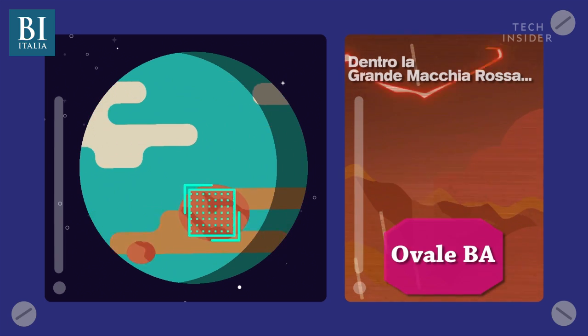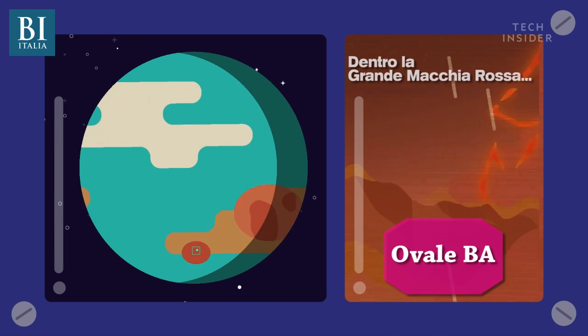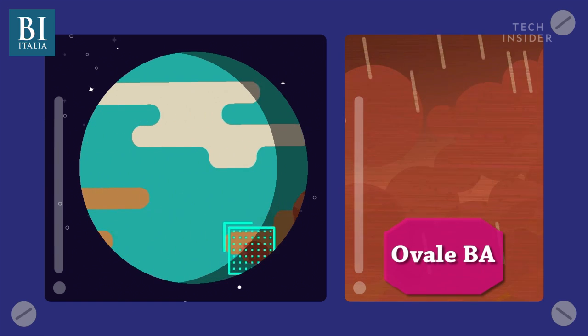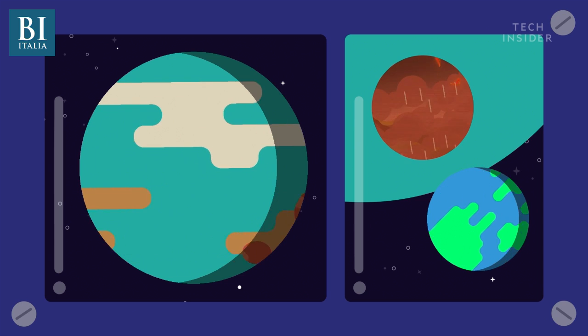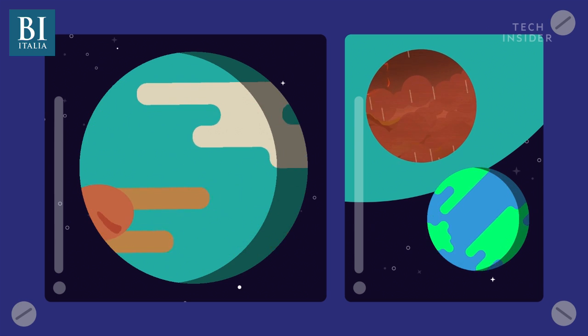Its name is Oval BA, otherwise known as the Little Red Spot. But it's hardly little. It's actually about the size of Earth, and it's been growing in size since astronomers discovered it in 2000.